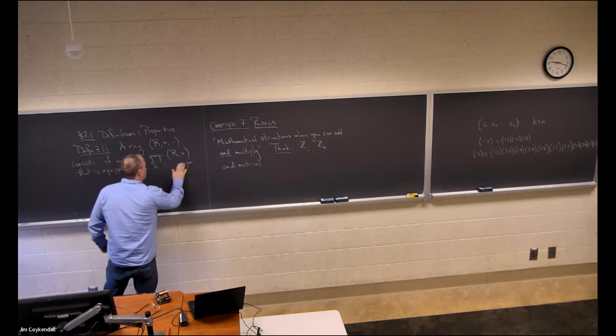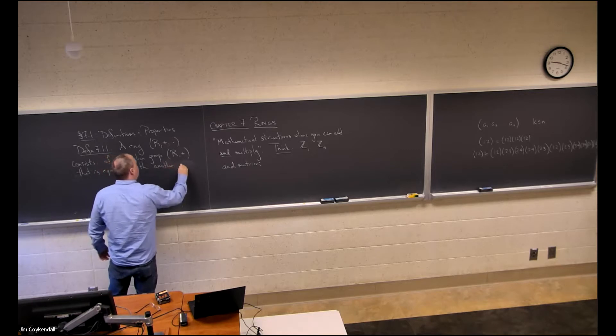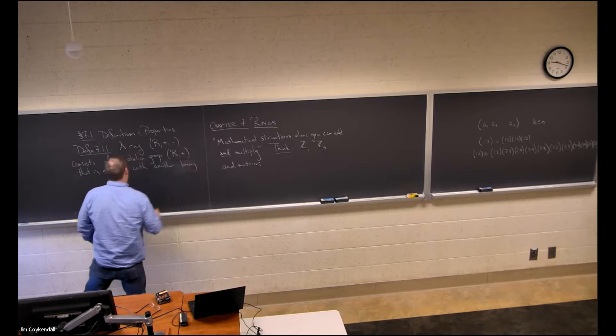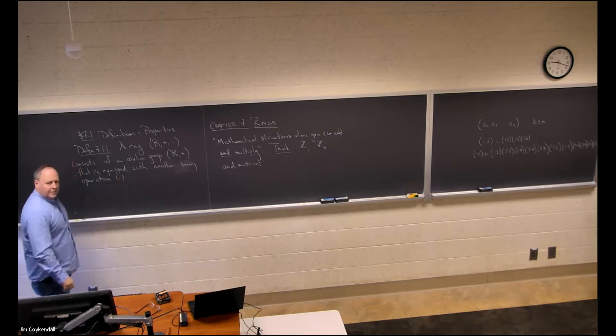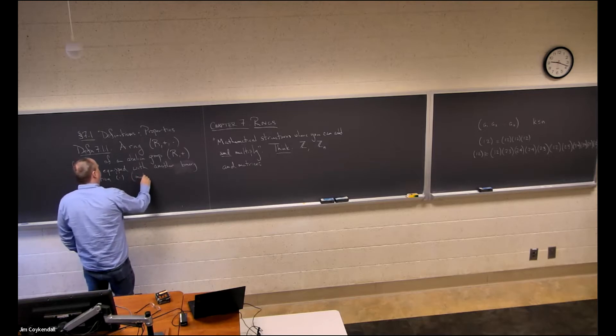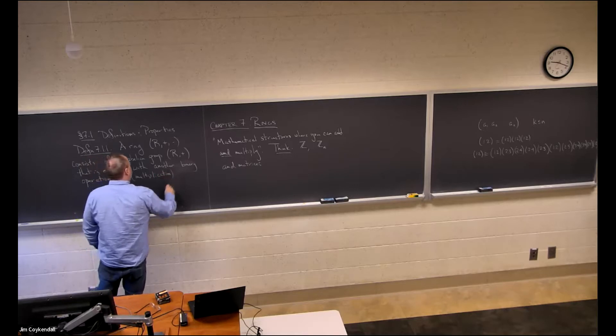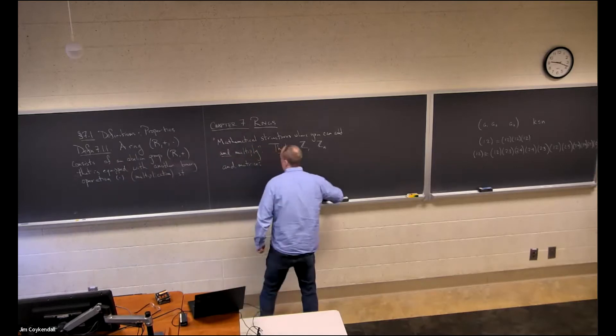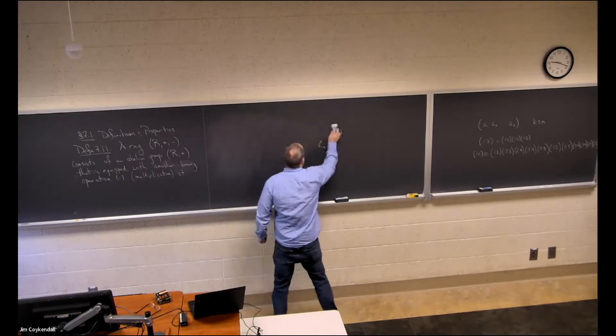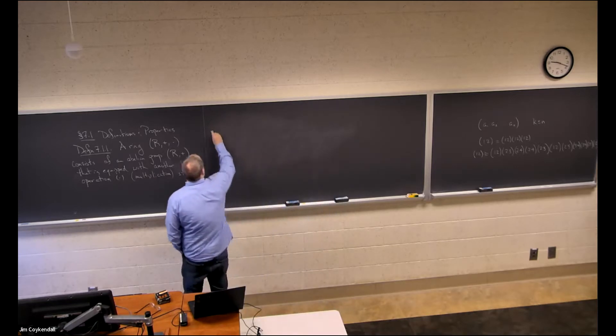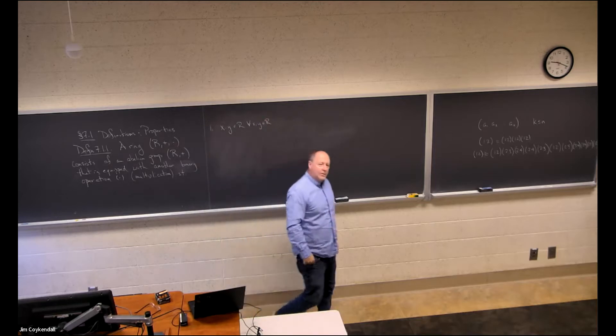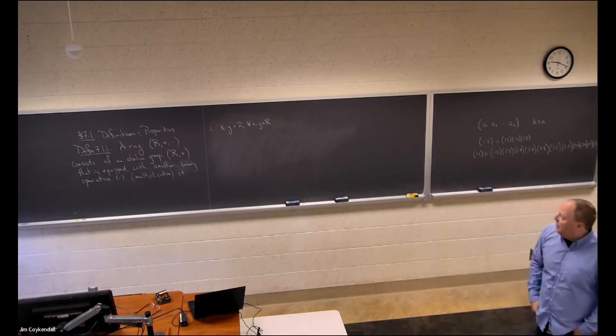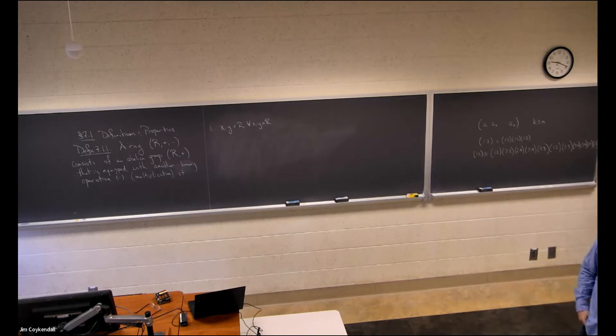So it's an abelian group that is equipped with a binary operation. Well, actually, let me be explicit here. Another binary operation that I called dot up there, and we'll sometimes just use juxtaposition for. Okay, so let's talk about the multiplication. How does the multiplication work? Okay, this is something I mentioned earlier. The product of two elements is still in there. That's actually covered by the fact that this is a binary operation, but I'm writing it out explicitly. When you multiply any two elements in R, it's still in R.